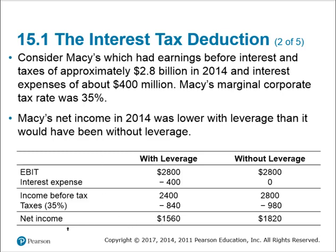Net income is lower with leverage because you have interest expense. Without leverage, that's the highest amount because there is no interest expense. But look at how much is paid out in taxes — there's actually $140 million less in taxes paid if we borrowed money.